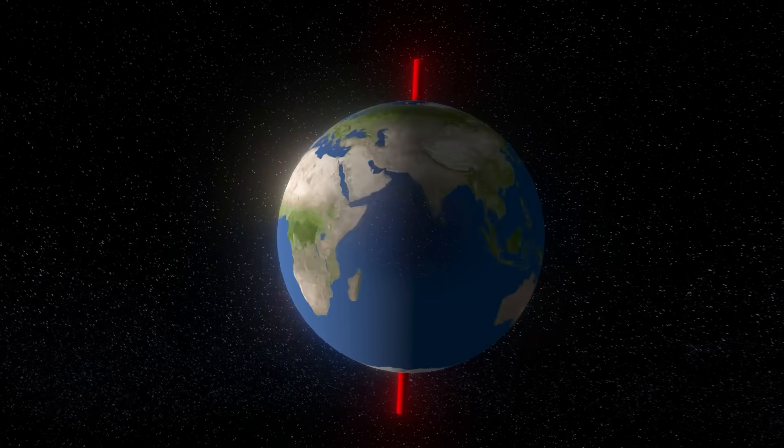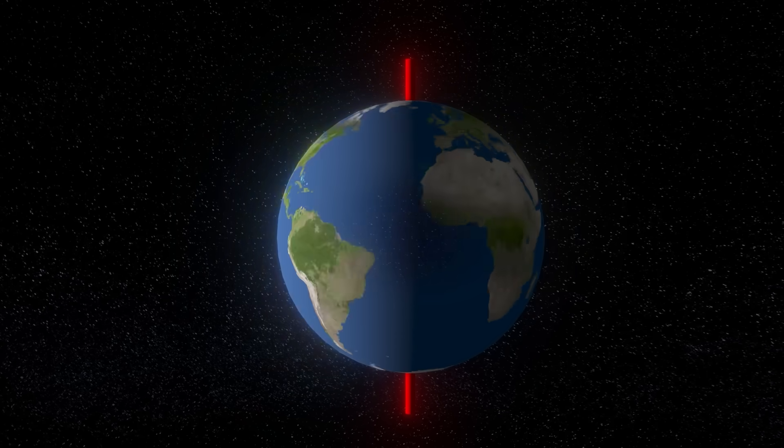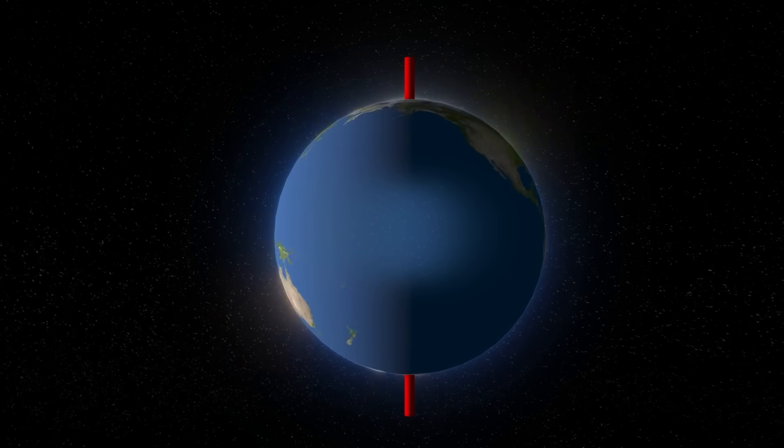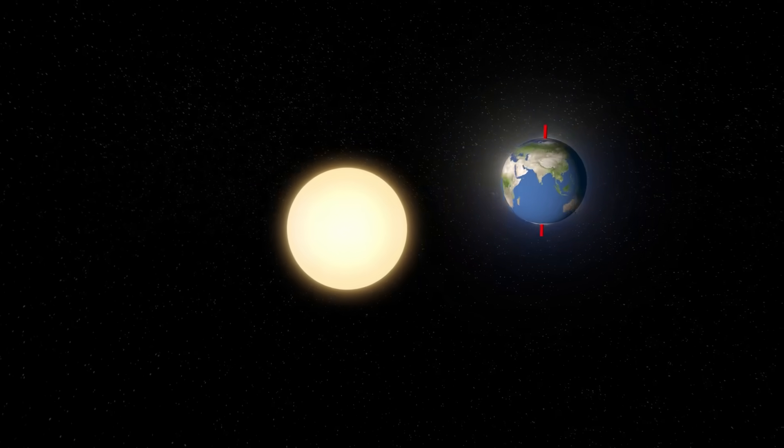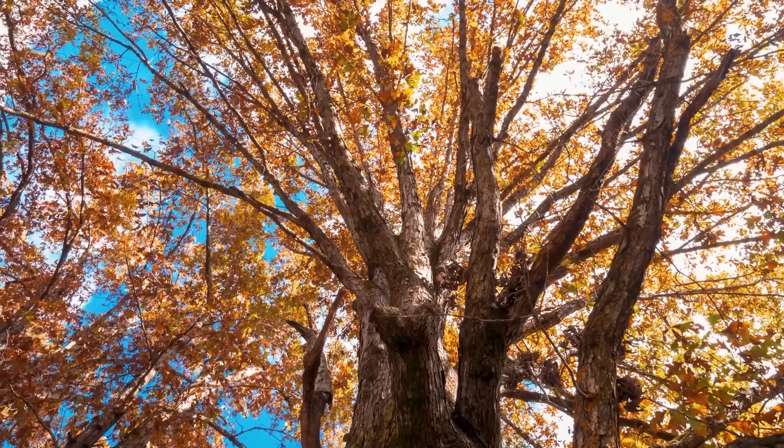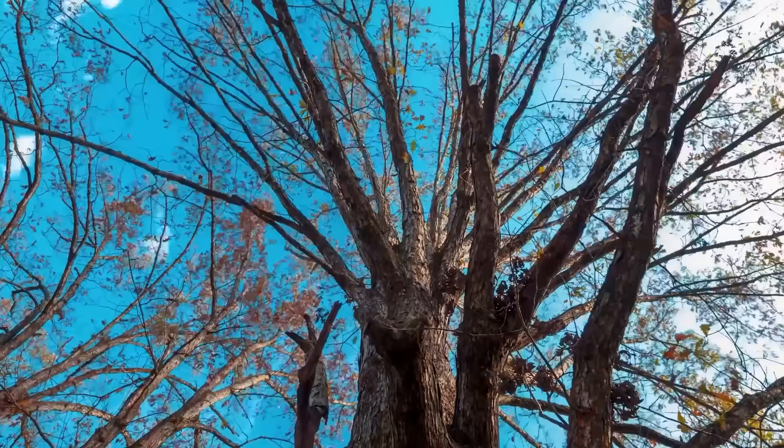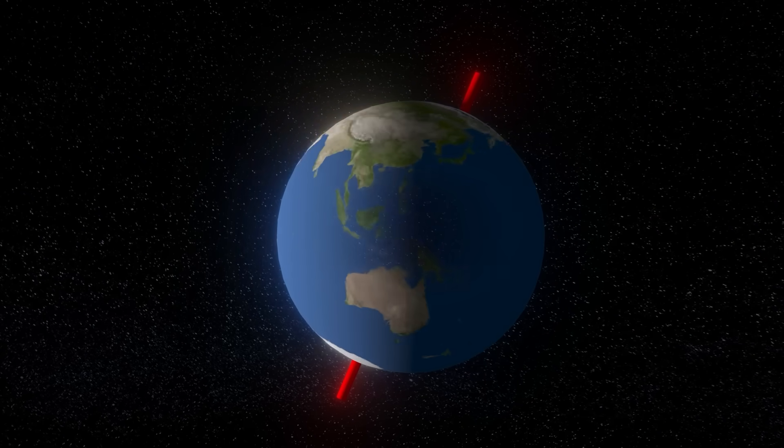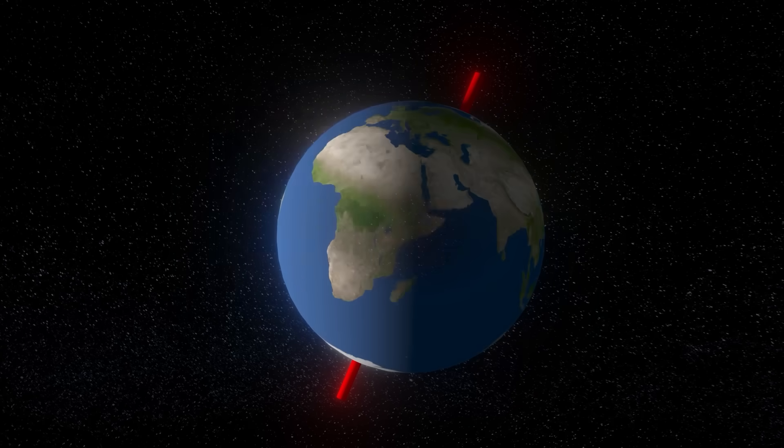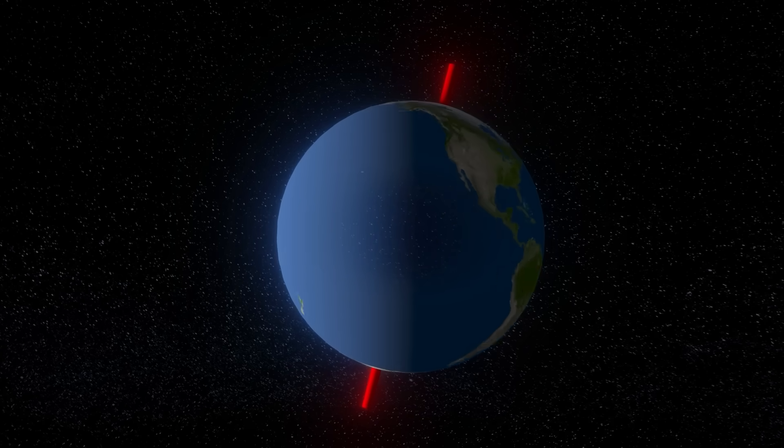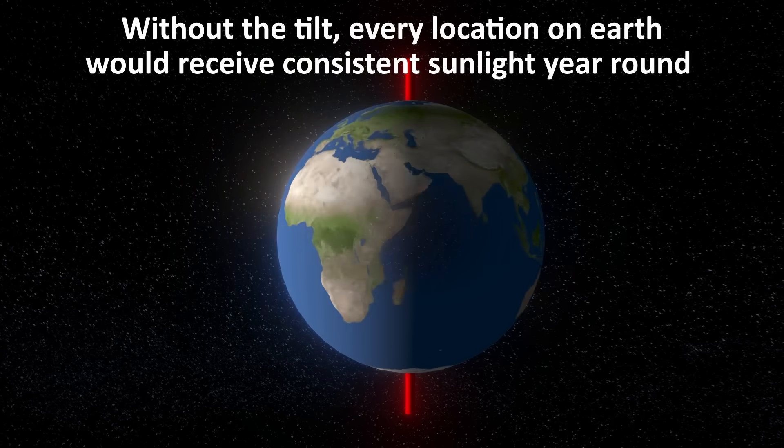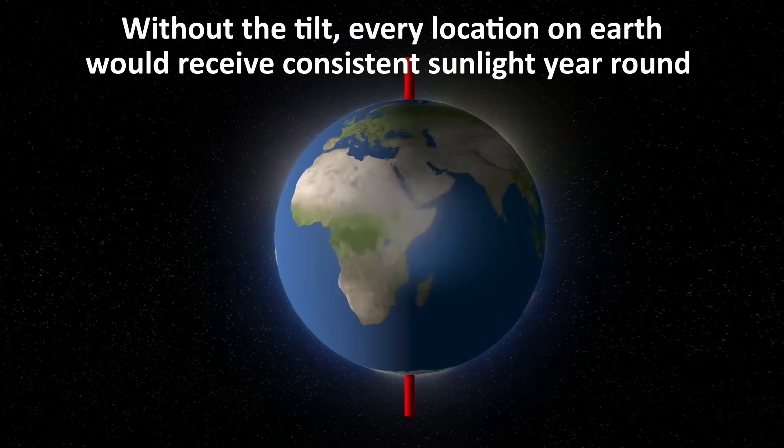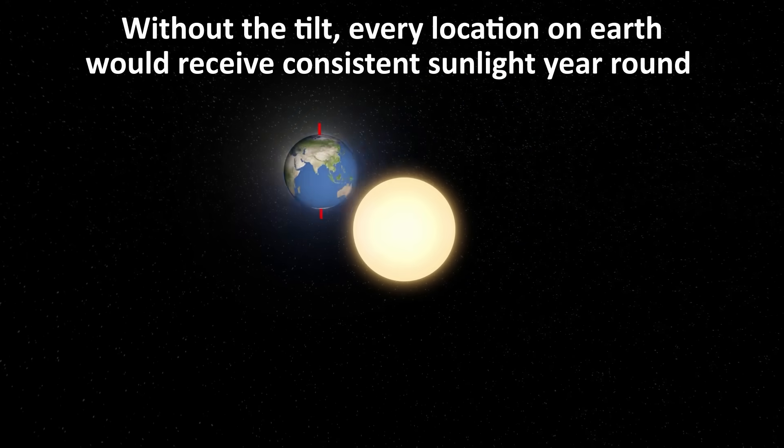If the earth didn't have a tilt, that is if its axis were perpendicular to its orbital plane, several significant changes would occur. The most noticeable change would be the absence of seasons as we know them. The tilt is responsible for the variation in the intensity and duration of sunlight at different latitudes throughout the year, which lead to the four seasons. Without the tilt, every location on earth would receive a consistent amount of sunlight year round, and for about 12 hours every day.